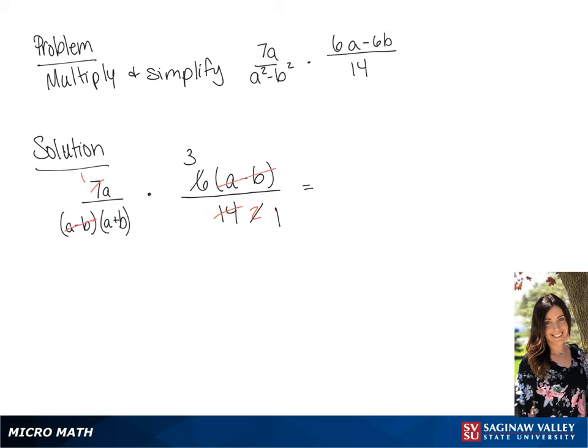We can simplify 6 over 2 to 3 over 1. Now we have a over a plus b times 3 over 1.